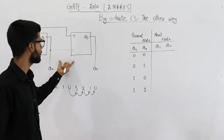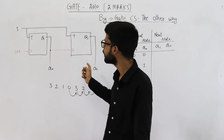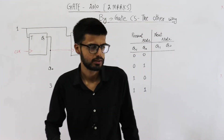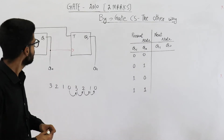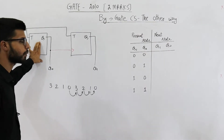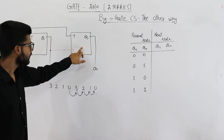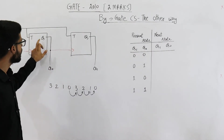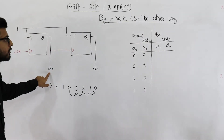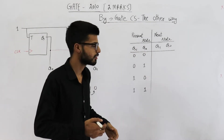Now if you are not able to identify that this is a two-bit binary asynchronous down counter, then you can simply draw a table and find out the counting sequence. This flip-flop is connected to the clock, so it will be the first one to react on a clock signal. The clock input of the second flip-flop is the output of the first flip-flop — that is Q0. So whenever you give a clock, Q0 will reverse its value.